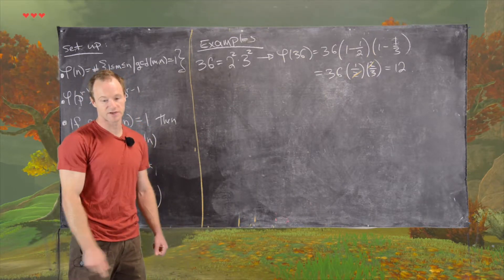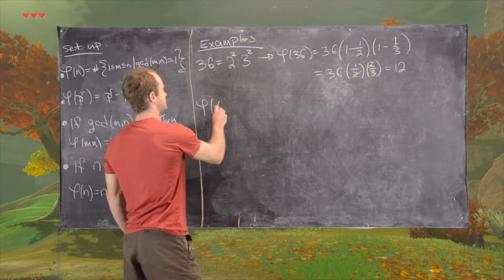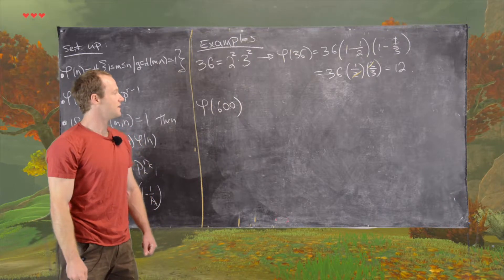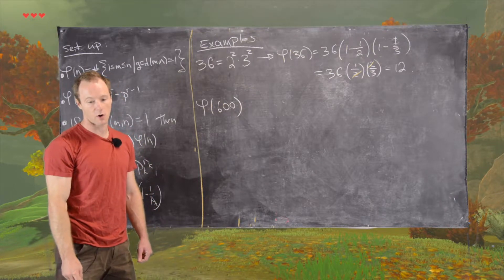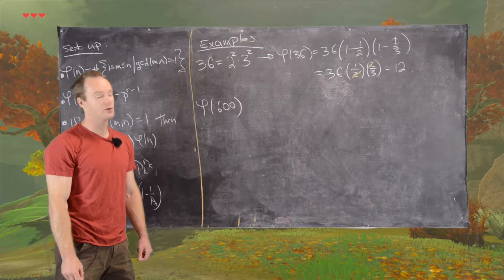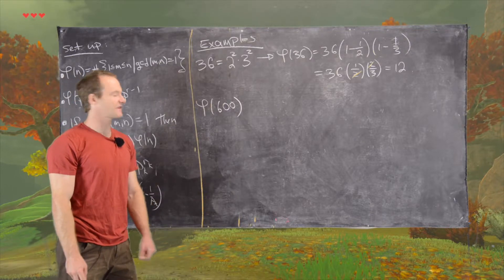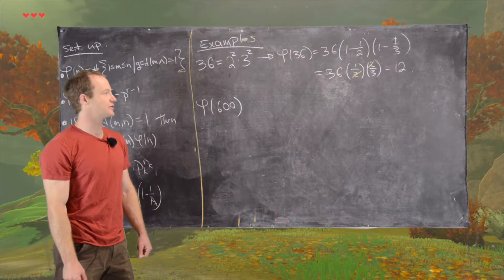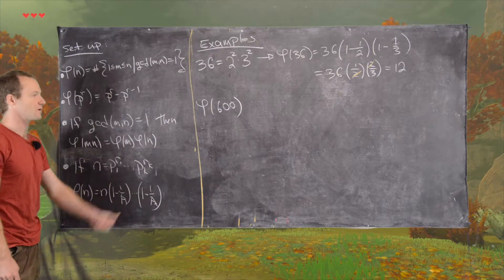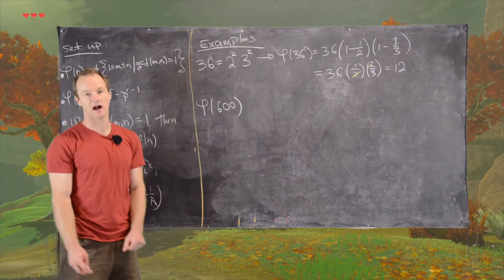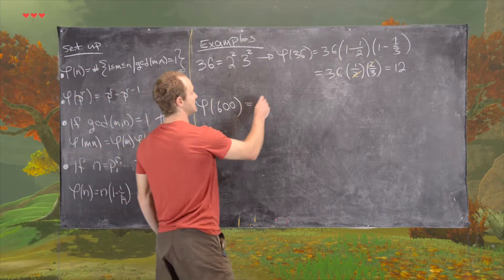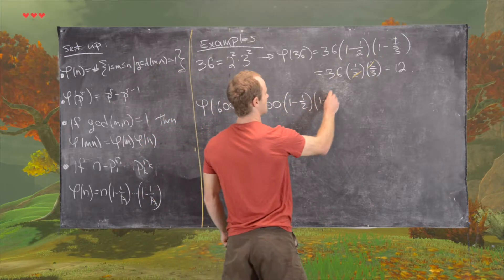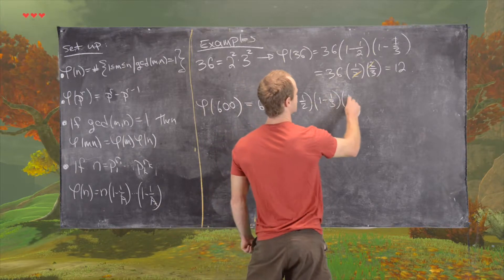So let's look at another example. Maybe phi of 600. So the prime factors of 600 are only 2, 3, and 5. So I'll let you check that, and I won't even write down what exponents we need for 2, 3, and 5. I'll just use the fact that we have this formula. So 2, 3, and 5 are the only prime factors here. So that means this is going to be 600 times 1 minus half times 1 minus third times 1 minus fifth.